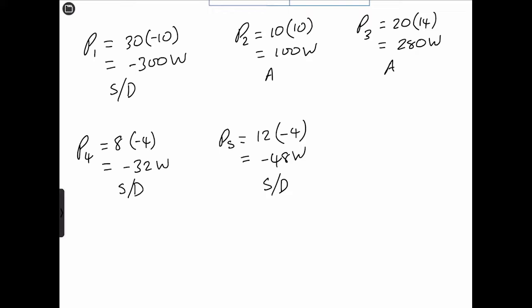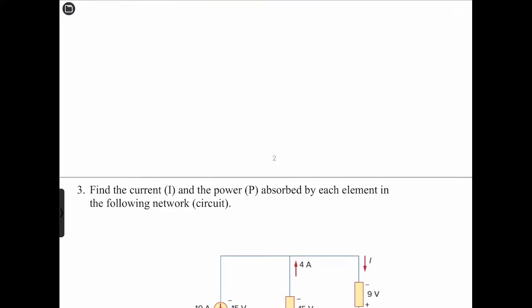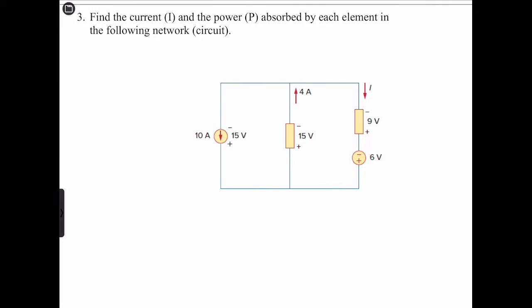This obeys the conservation of energy — if you add all the power absorbed or delivered by each element, that should be equal to zero. For the third problem, we're asked to find the current and power absorbed by each element in the following network.